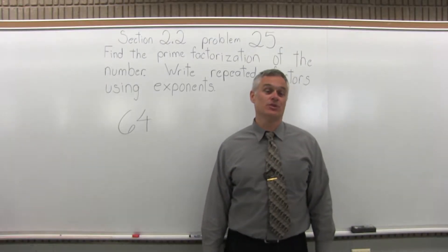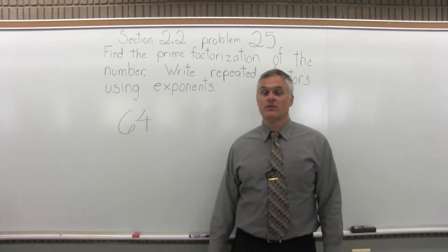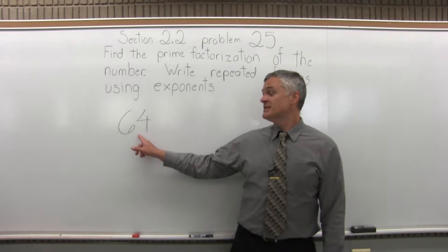This is Section 2.2, Problem 25. It says find the prime factorization of the number, write repeated primes using exponents. So we have 64.